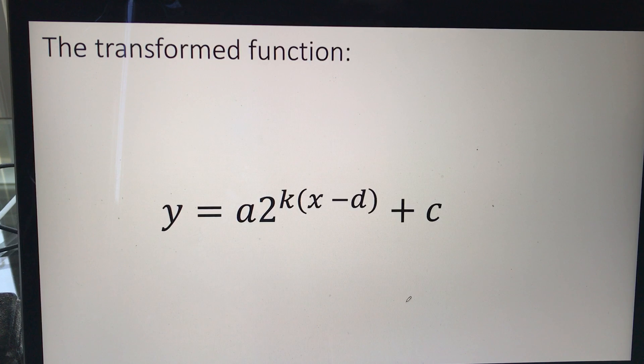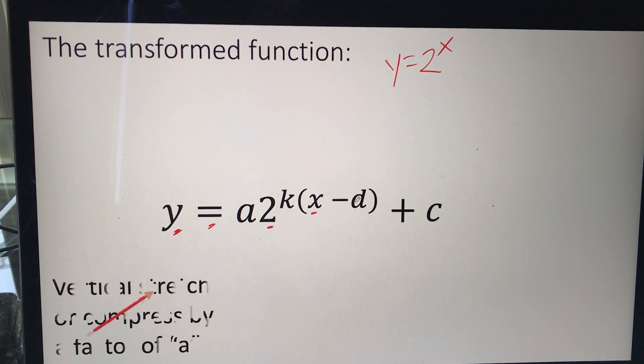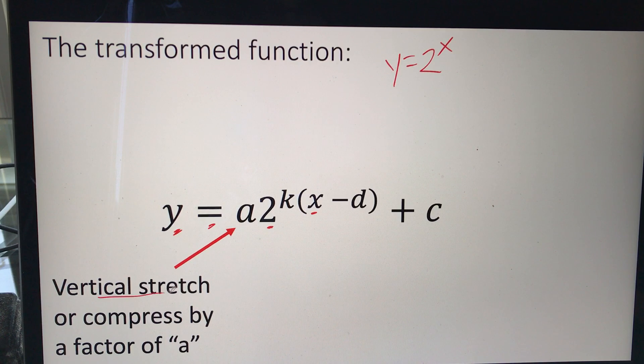So the transformations, all four transformations that we look at here, here's our basic function, y equals 2 to the x. It just has all these transformations applied to it. So the first one is the a out front. That's our vertical stretch or compression by a factor of a. So let's multiply the y values by a.